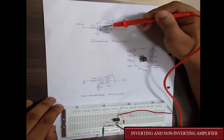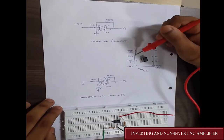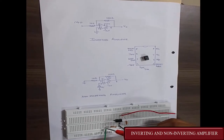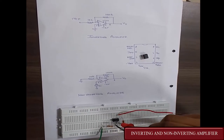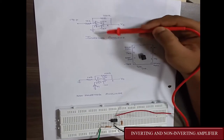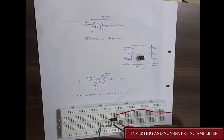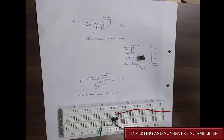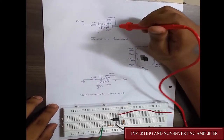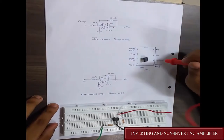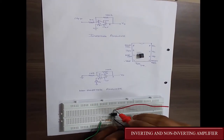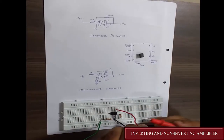Referring to the diagram, the input is applied at the inverting terminal which is pin 2. Through a resistor, the input is applied at pin 2. The third pin, which is the non-inverting pin, is grounded. There is a feedback resistor connected from pin 2 to pin 6. Pin 6 is the output pin.